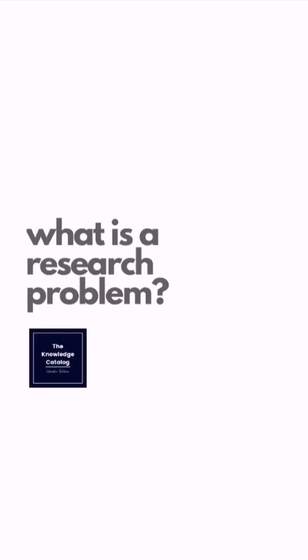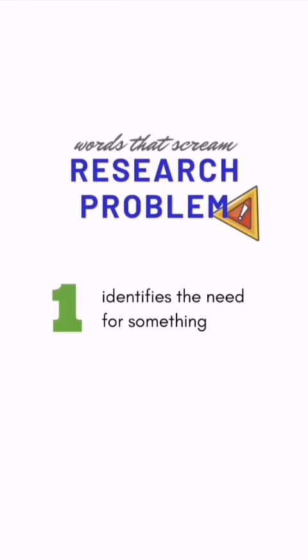Welcome to the Knowledge Catalog. This video is going to define what a research problem is and is not. The first characteristic is it identifies the need for something. A good research manuscript is going to identify the research gaps — things that were not discussed yet by previous literature and studies.